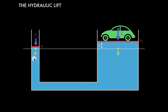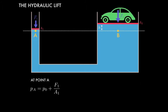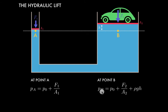We're going to calculate the pressure at point A and the pressure at point B. Starting with point A, the pressure at A equals the air pressure plus F1 divided by A1 — the pressure due to the applied force. At point B, the pressure equals the air pressure plus F2 divided by A2, plus rho times G times H — the additional pressure due to the column of liquid above point B.